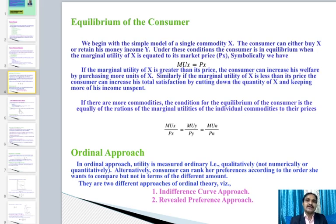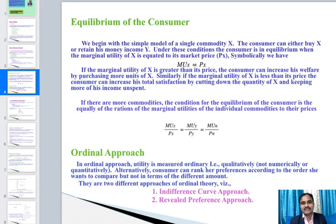Now we come to the ordinal approach. In the ordinal approach, utility is measured ordinally — that is qualitatively, not numerically. The consumer can rank preferences according to the order of wants but not in terms of different amounts.